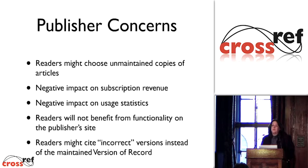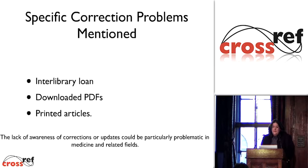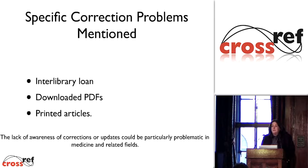Readers might cite the incorrect version — they might not cite the version of record. These are the things publishers told us they were concerned about. They talked about what happens if somebody acquires something by interlibrary loan, downloads a PDF, or prints an article — how do they know if there are corrections subsequent to that? And a number of publishers mentioned that specifically in medicine and related fields, it's very important that corrections be communicated to researchers.